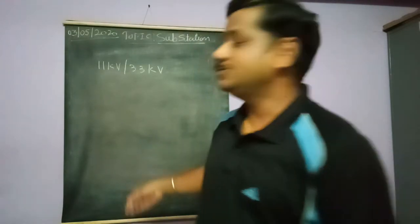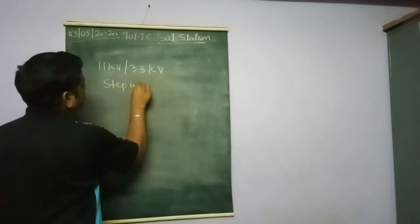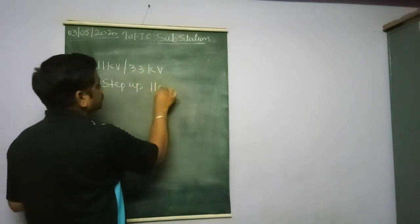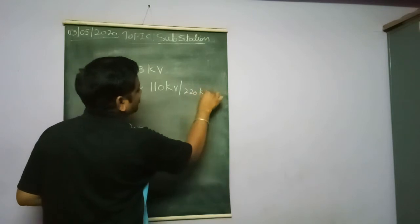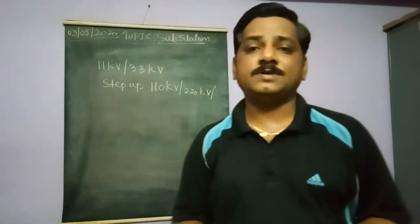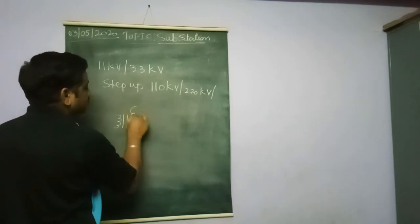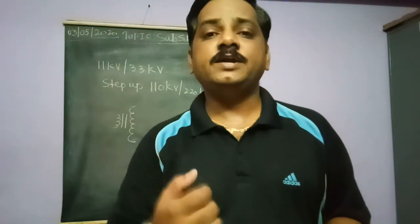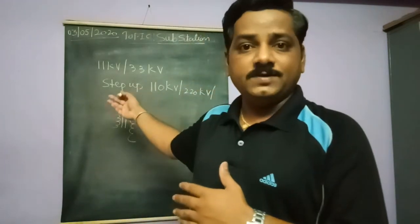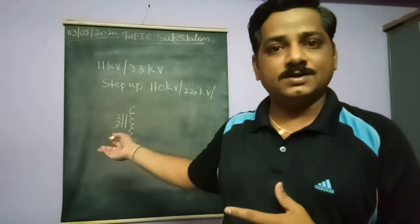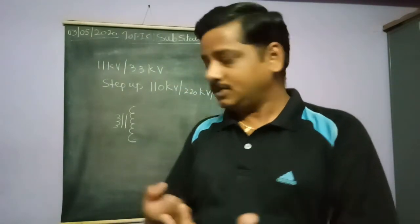The transformer steps up the voltage to different levels such as 110 kV, 220 kV, 66 kV, or 33 kV. In a step-up transformer, the primary has fewer turns and the secondary has more turns. The major considerations are the cooling system and the rating of the transformer. These transformers are rated in MVA — mega volt-ampere — not just kVA, because the ratings are very high.